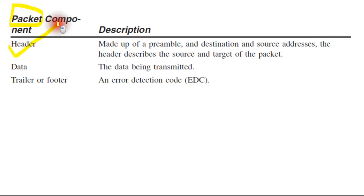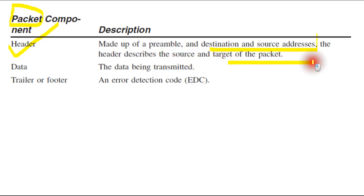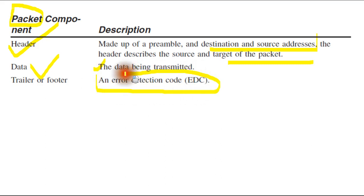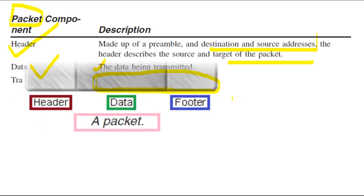Now let me show you the components of a packet. There are three components in one packet. First is the header — it is made up of source and destination address. The header describes the source and target of the packet, meaning where it is coming from and where it has to go. Second is the data itself — whatever you are sending, like a video, MP3, or text file. Third is the trailer or footer — it contains an error detection code, which handles any error in the packet.